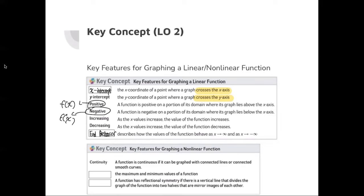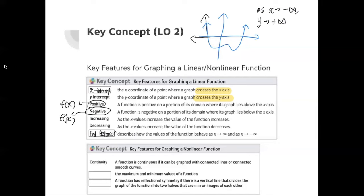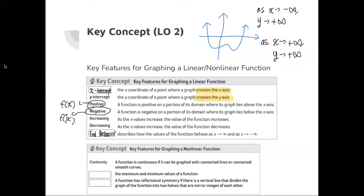For end behavior, if you have a function going up on both sides, you write: as x approaches negative infinity, y approaches positive infinity; and as x approaches positive infinity, y also approaches positive infinity. You can also write this in limit notation: the limit as x approaches negative infinity of f(x) equals positive infinity, and the limit as x approaches positive infinity of f(x) equals positive infinity. These sentence and limit notations express the same thing.